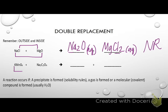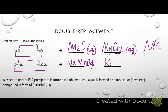Let's do the next example. I'm going to put the inside things together first — I have sodium and permanganate, each plus one, so that gives NaMnO₄. Then I put the outside things together and I've got potassium oxalate — potassium is plus one, oxalate is negative two — so that's K₂C₂O₄. I go check my solubility rules and I see I have two group one metals, so it's going to be aqueous plus aqueous. This would be another example of a no reaction.